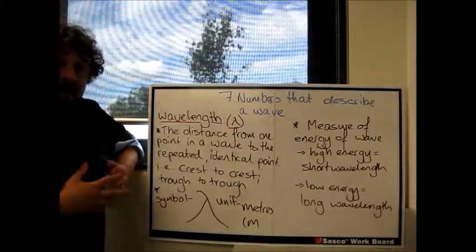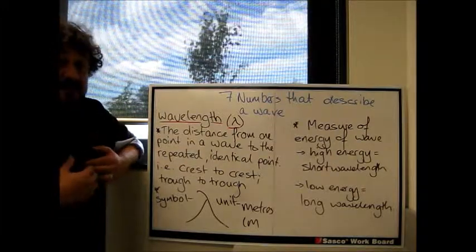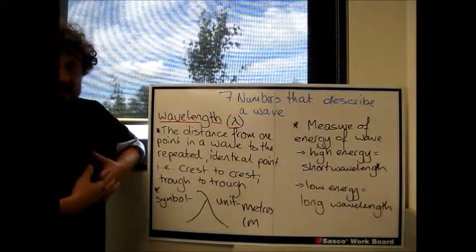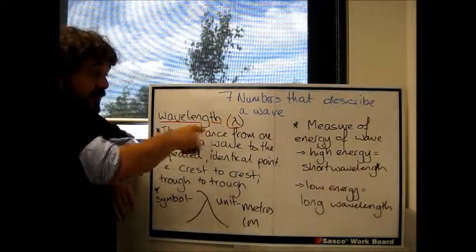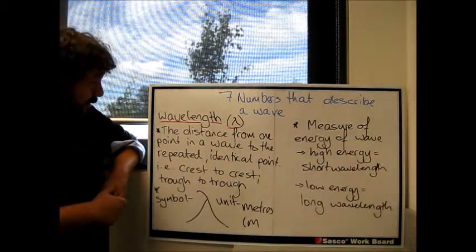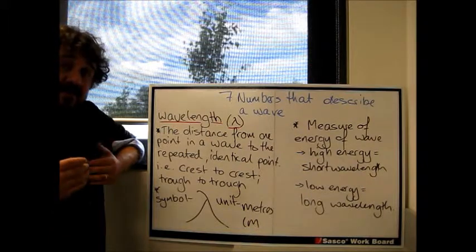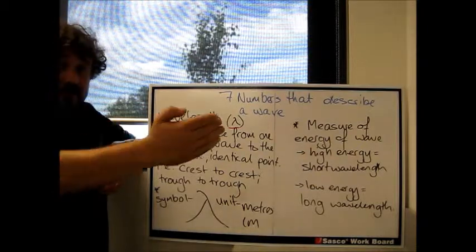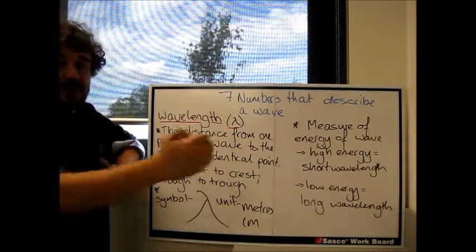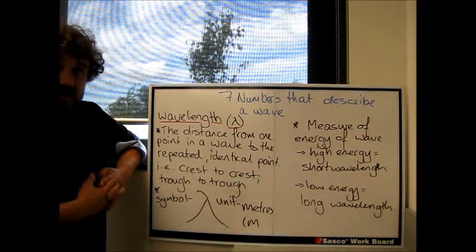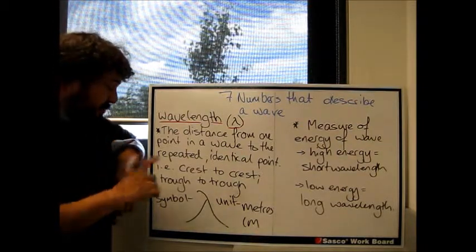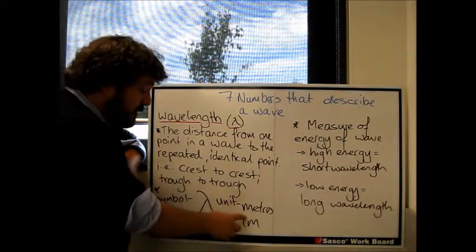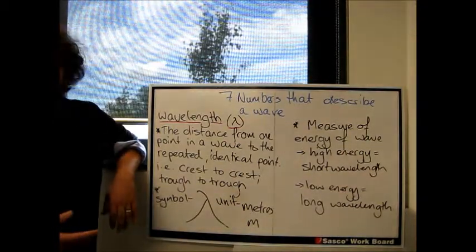Now, a wave is a mathematical feature. We've got seven features we can use to describe this, seven numbers. So first off, and the one you're going to hear the most about probably, is the wavelength. We use this symbol here, which is lambda, that's the Greek letter lambda, and essentially it is the distance from one point in a wave to the next identical point.